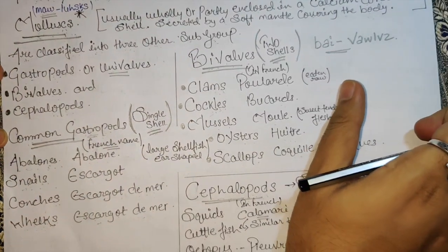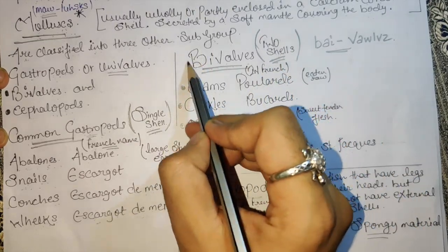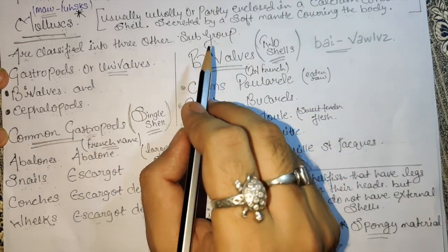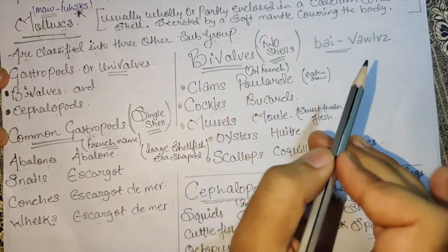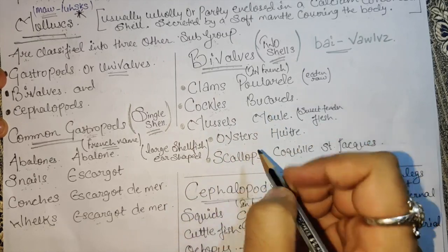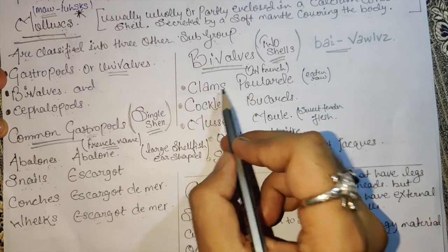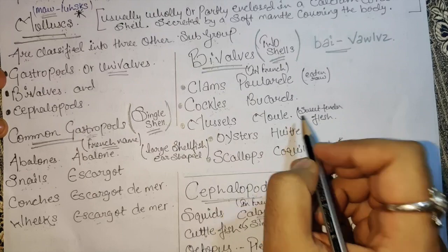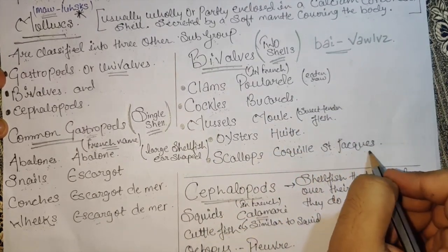Bivalves have two shells — 'bi' meaning two. Examples include: clams ('palourde'), cockles, mussels ('moules'), oysters ('huîtres'), and scallops ('coquilles Saint-Jacques'). So bivalves have two shells, one on each side.